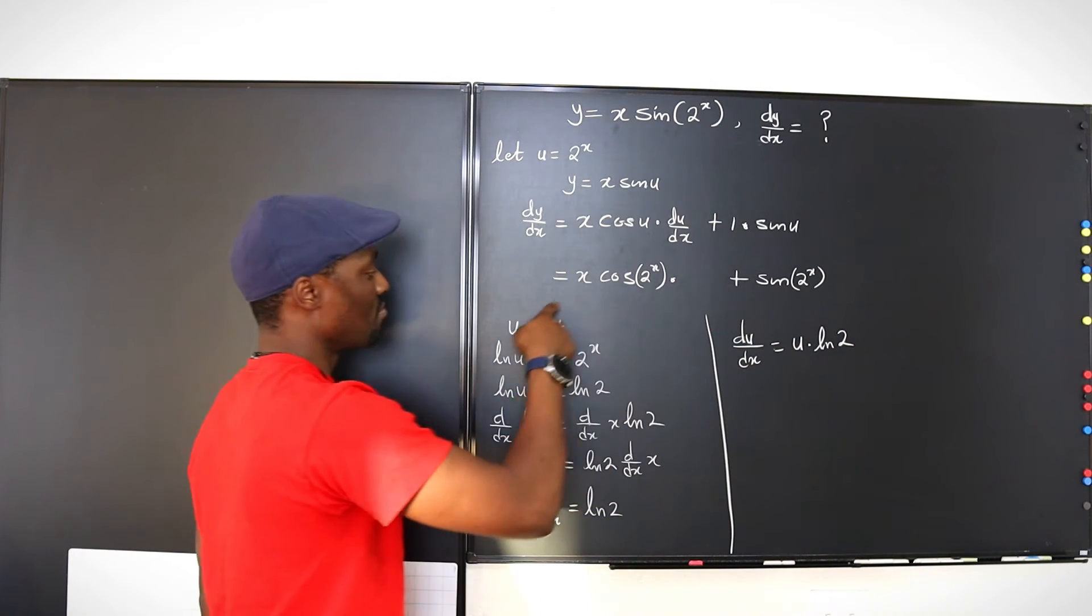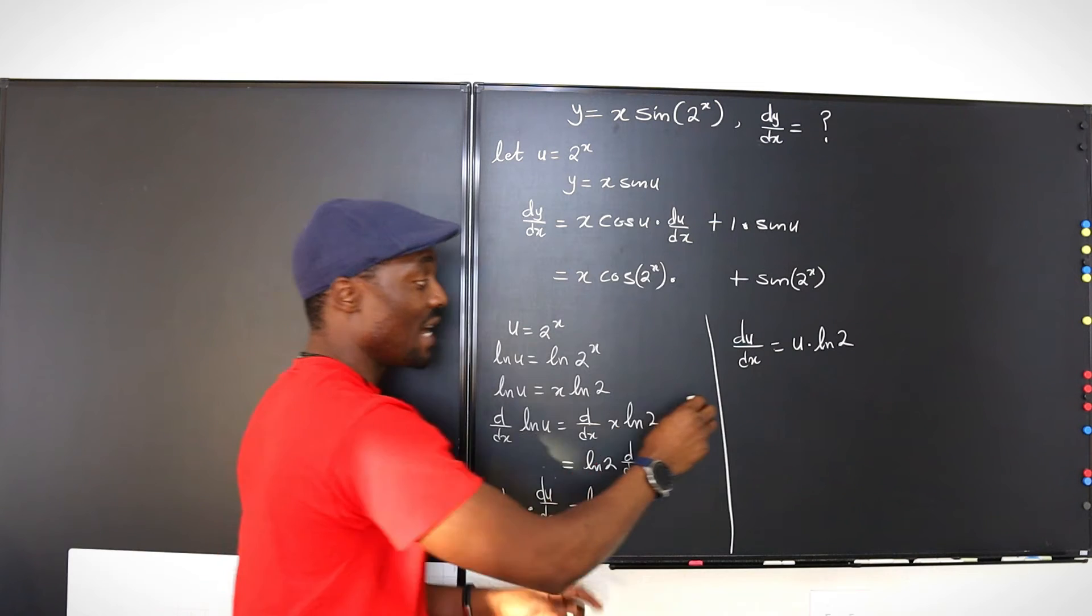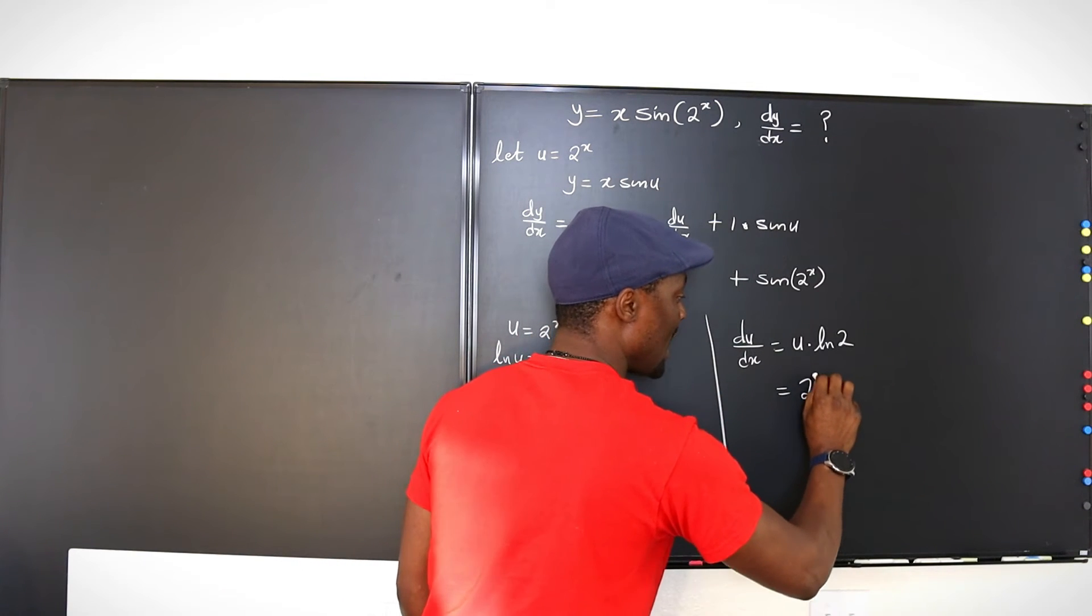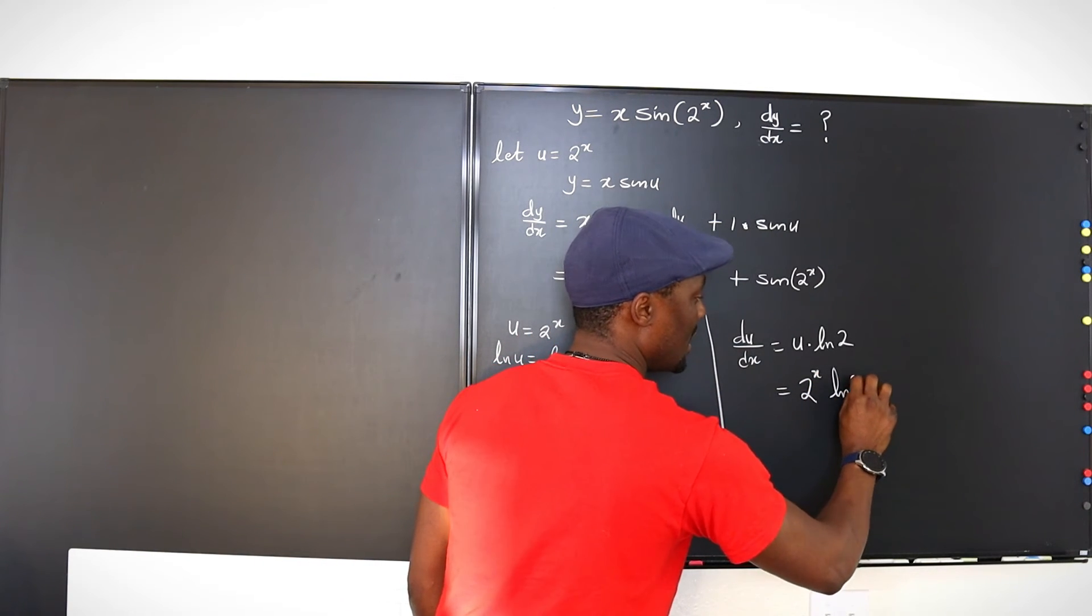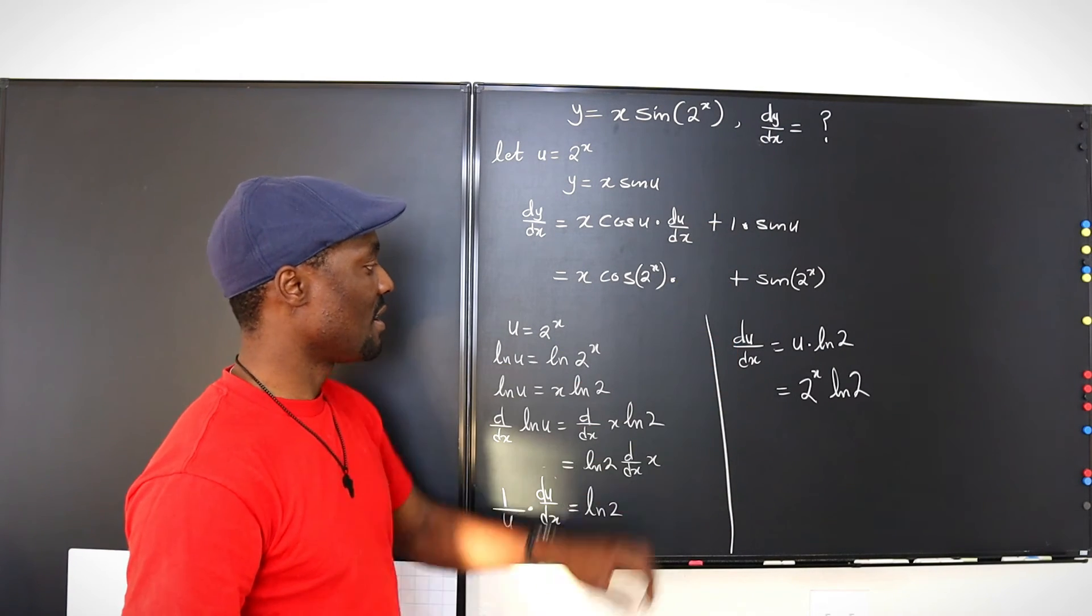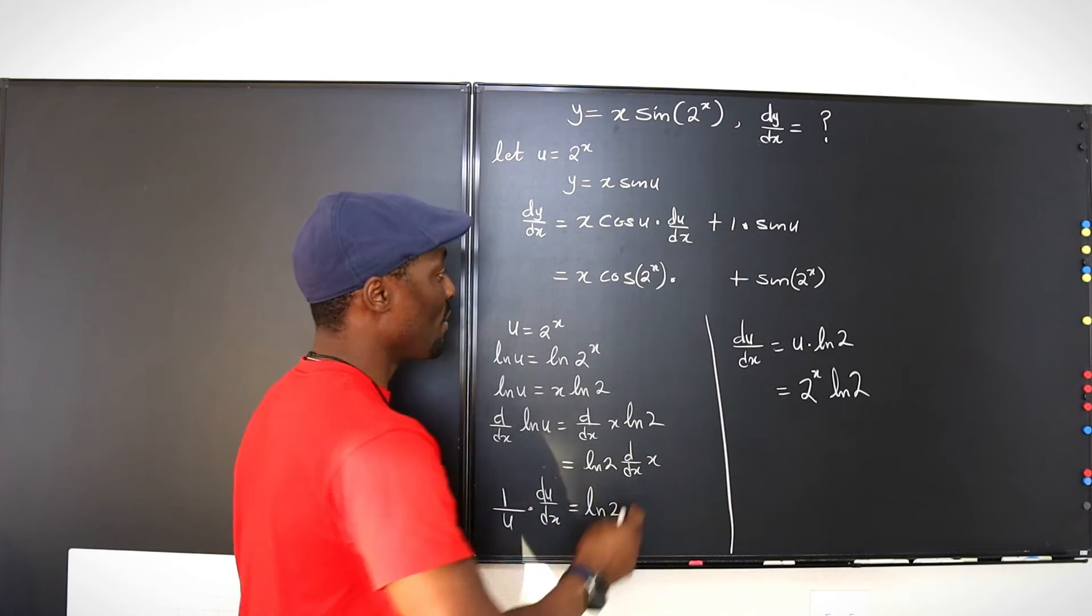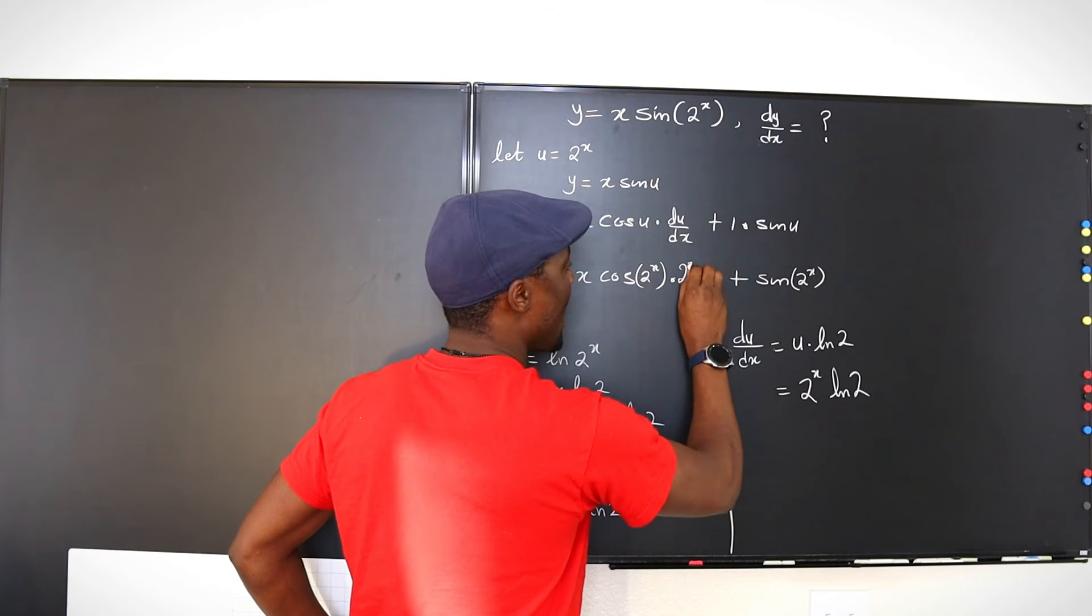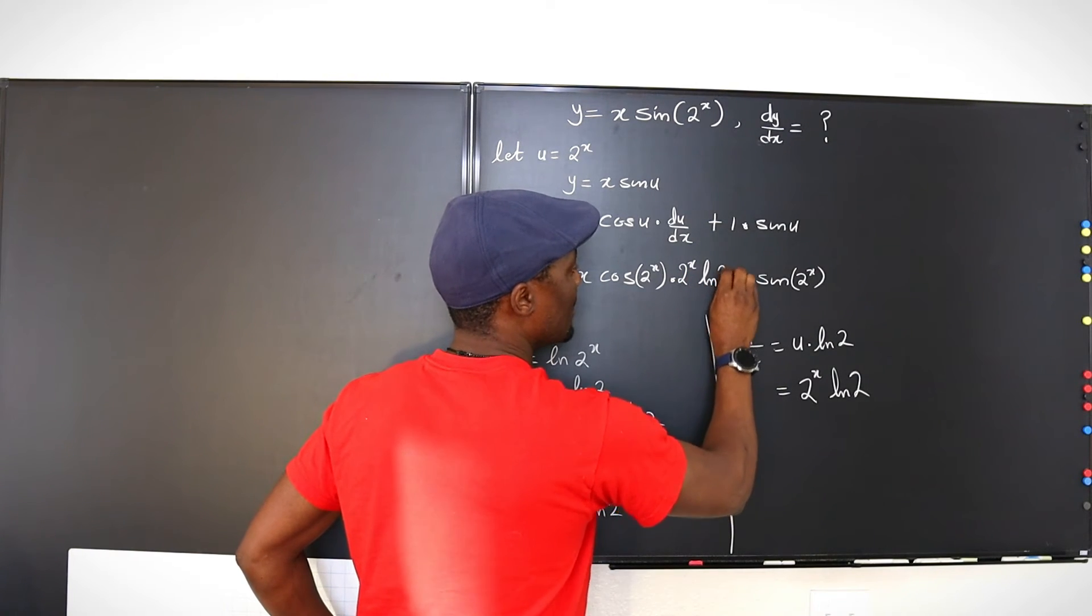Now, what is u? That's it. So our du dx is actually 2 to the x ln 2. And that's what we're supposed to plug in here, because that's our du dx. So I'm going to write 2 to the x ln 2.